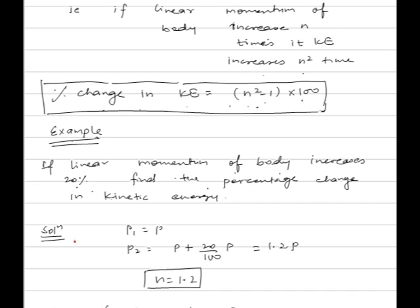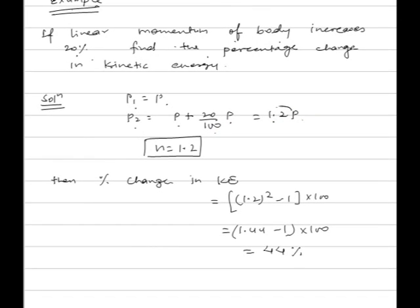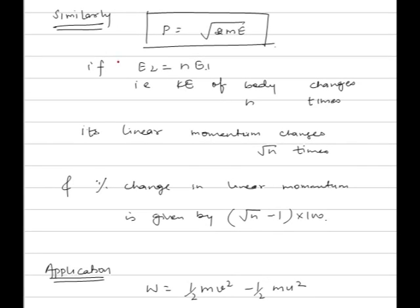Example: if linear momentum of a body increases 20 percent, find the percentage change in kinetic energy. Initial momentum is p and final is p plus (20/100) into p, that is 1.2p, so n is equal to 1.2. Using the relation, percentage change in kinetic energy is (1.2 squared minus 1) into 100, which is (1.44 minus 1) into 100, giving 44 percent as the final answer.